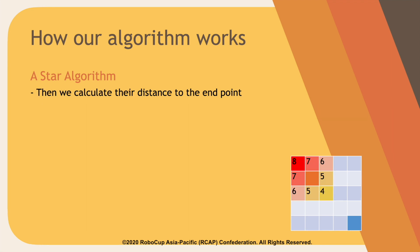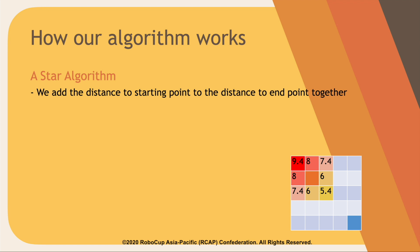Then we calculate their distance to the end point. I highlighted these blocks with a gradient — the more yellow it is, the closer it is to the end point, and the more red it is, the further away it is. Then we add the distance to the starting point and the distance to the end point together to create the total distance.